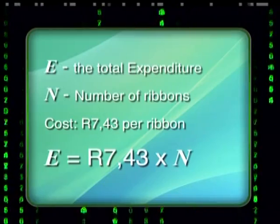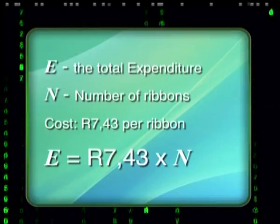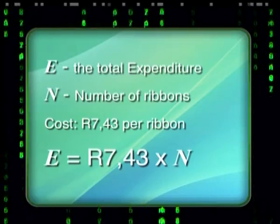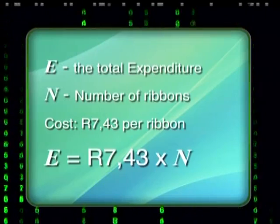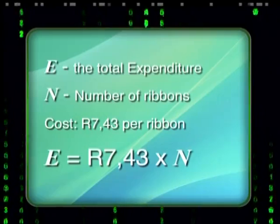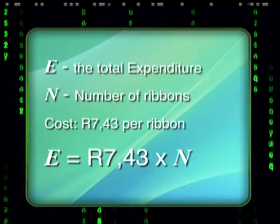You've got the equation for income correct. Now, what about the formula for calculating the expenditure in making the ribbons? For my expenditure formula, N will still represent the number of ribbons and E will stand for the total expenditure. I'll work out the expenditure formula in the same way as I did for the income formula. E equals the cost of making one ribbon — 7 rand and 43 cents — times N, the number of ribbons Ma Di makes.